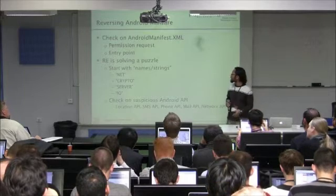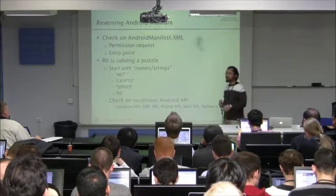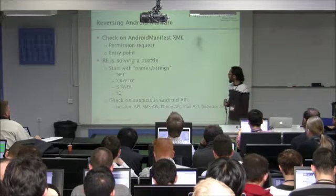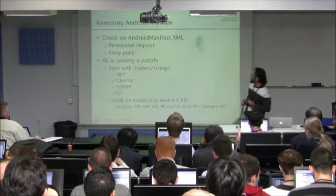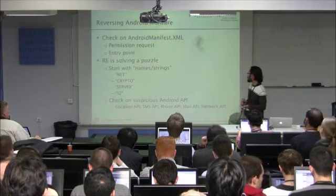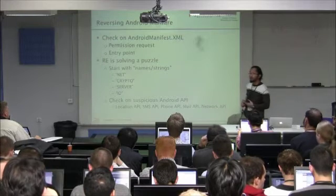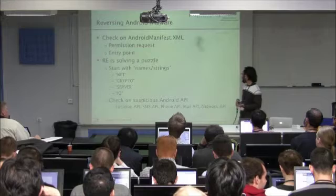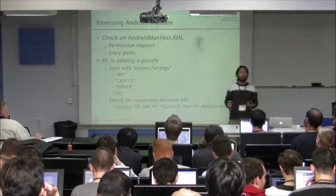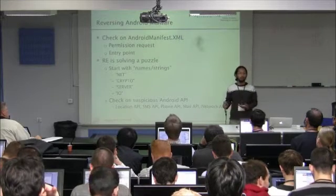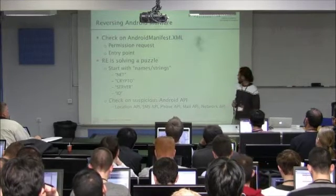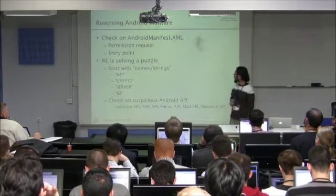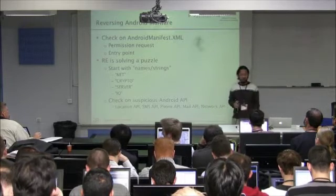Try to look at stuff like NetCrypto, server, or IO input — it's much easier. And of course you probably need to check for suspicious Android API usage, like for an SMS application you probably don't need access to email or network API. So you need to check for suspicious Android API calls as well.